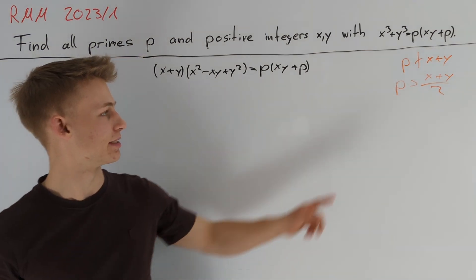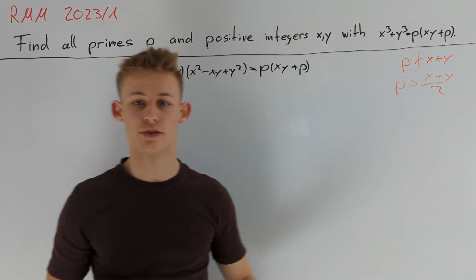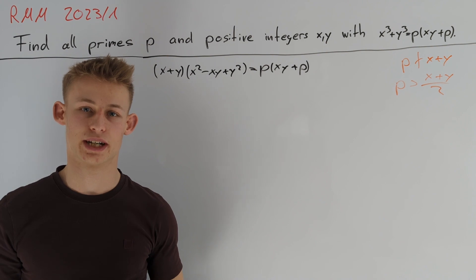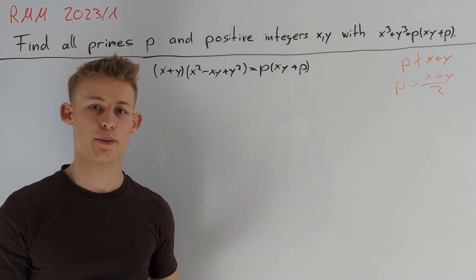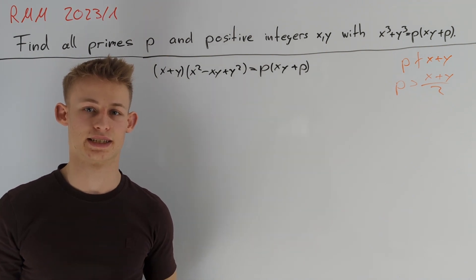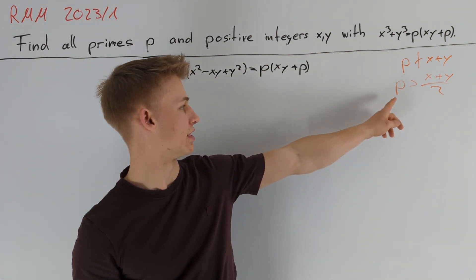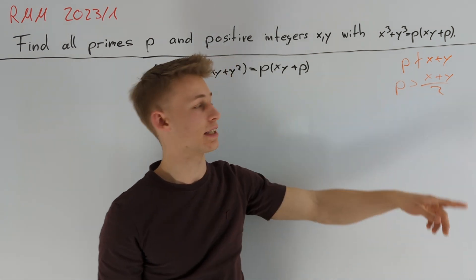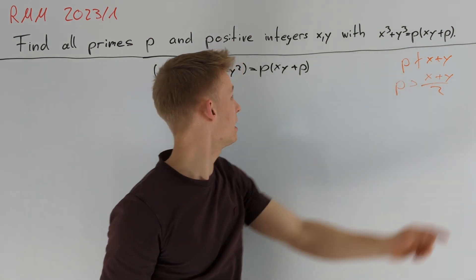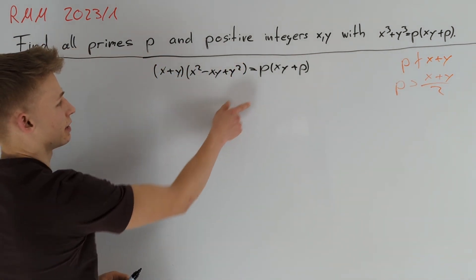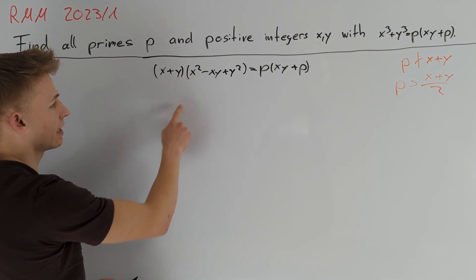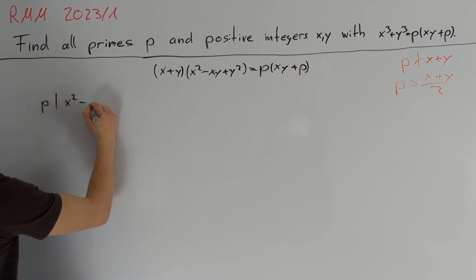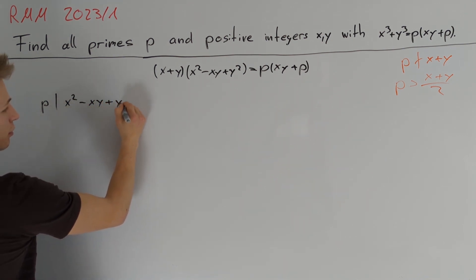We've shown p does not divide x + y, and p ≤ (x + y)/2 also leads to contradiction. Therefore we can assume p > (x + y)/2. Since p does not divide x + y, p must divide the second factor, so p divides x² - xy + y².